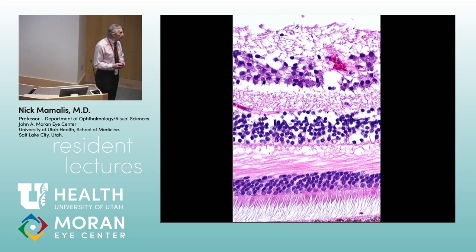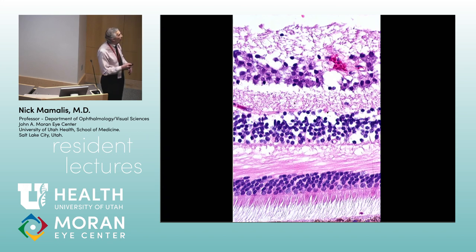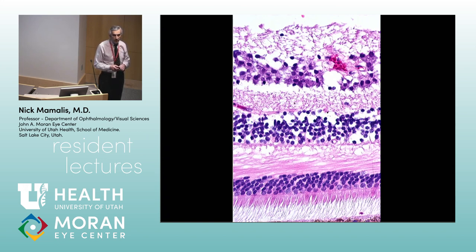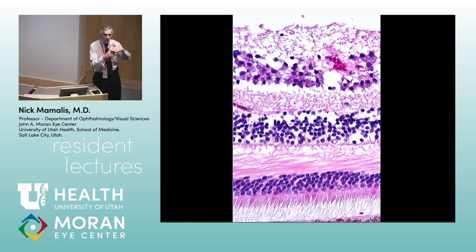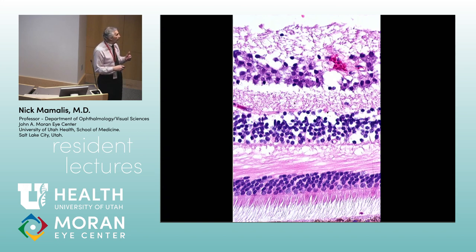Now we'll talk about what's in each cellular layer and what each layer does, going from in to out. The internal limiting membrane: it's really not a membrane like a basement membrane — Mueller cells have their foot plates on there and it provides a separation between the vitreous and the retina. We call it the internal limiting membrane but it's not a true membrane itself.